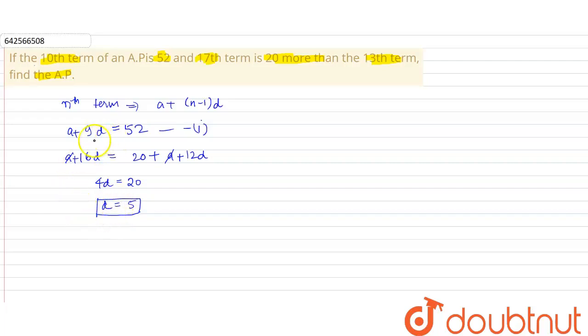We can find the value of a also. So we have a + 9 × 5 equals 52, or we get a equals 7. Now our AP will be...